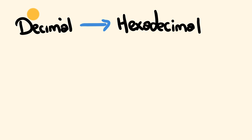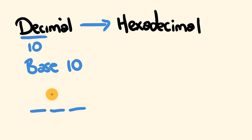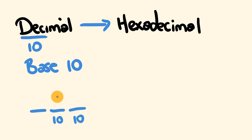Decimal has the prefix 'deci', meaning 10 — this is a base 10 numbering system. For a number in the hundreds, we have hundreds, tens, and units. In each digit position we can choose from 10 different digits: 0 through 9. That applies to the units, the tens, the hundreds, and so on — hence base 10.